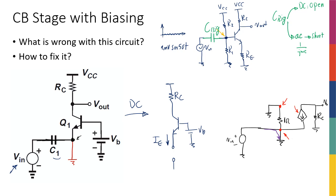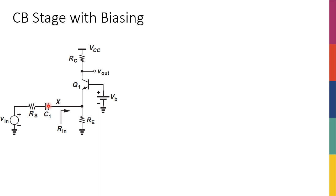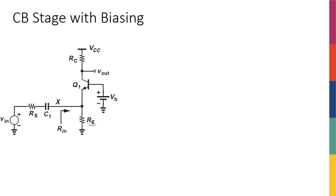The correct way to connect the signal is: use the coupling capacitor, and instead of connecting the emitter directly to ground, connect it through a resistor RE to ground. For DC analysis, the capacitor is open so none of the signal side exists — you just have RE providing a path to ground and you choose RE and VB to bias the transistor properly. For AC analysis, the capacitor is a short circuit but the emitter node is not ground anymore because of RE.